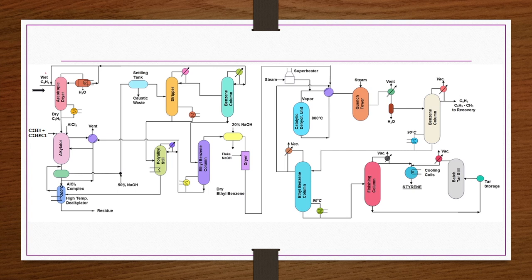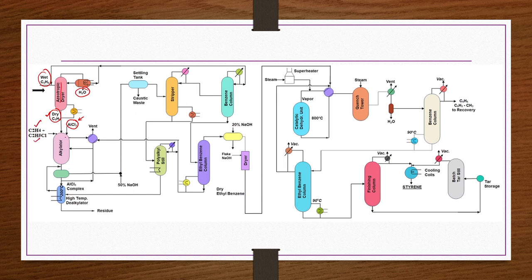In the flowchart, we start with wet benzene, but the process requires completely dry benzene because moisture would cause loss of catalytic activity of the aluminum chloride catalyst. Therefore benzene is dried using an azeotropic distillation column. At the top, a water-rich phase is condensed and separated; the wet benzene fraction is recycled back. Dry benzene from the bottom is sent along with ethylene, ethyl chloride, and AlCl₃ catalyst to the alkylator, operating at approximately 95°C and atmospheric pressure.